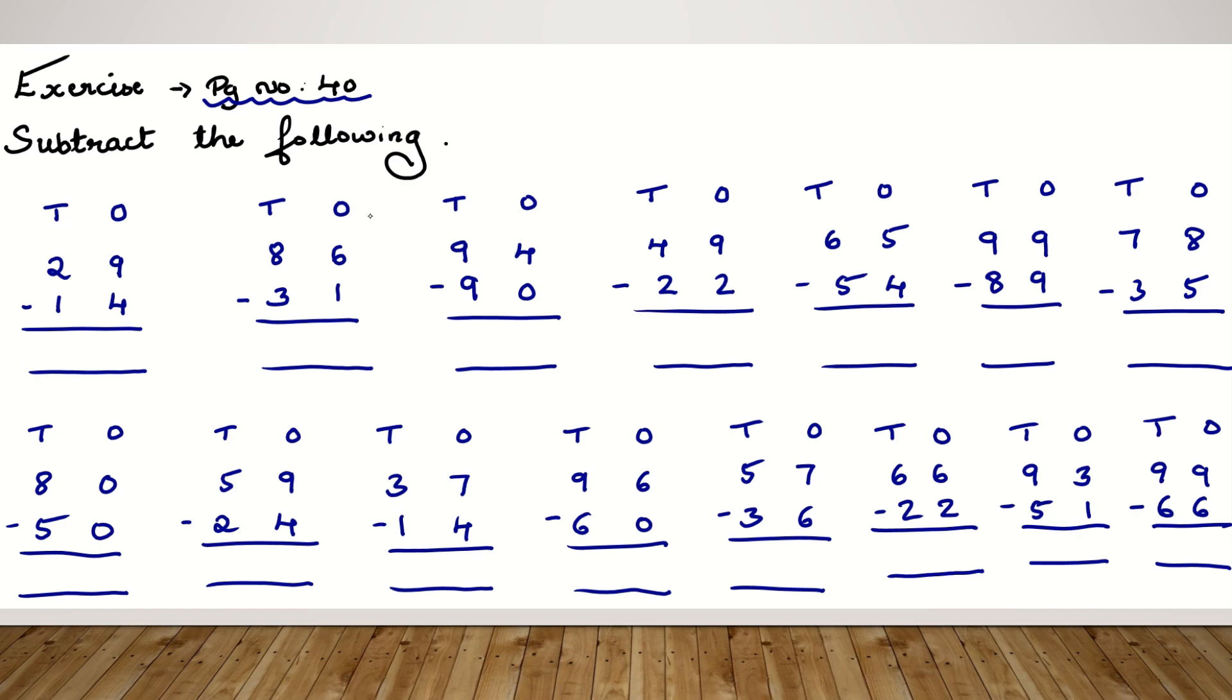Subtract the following. So to solve the subtraction of two digit numbers, you should remember two steps. Let's see what is the first step. The first step is you should subtract the ones place and the numbers which are there in the ones column.